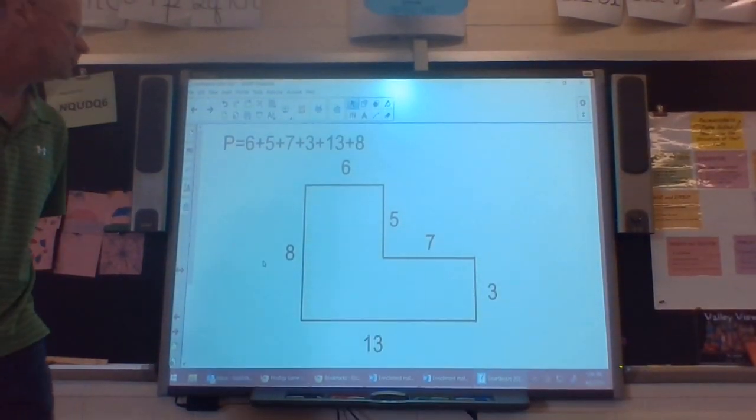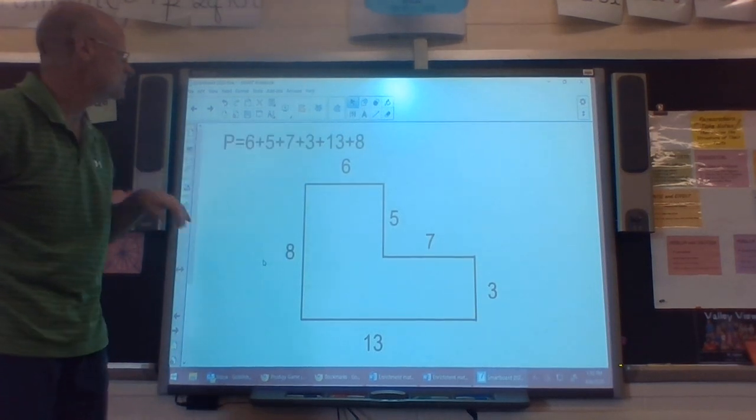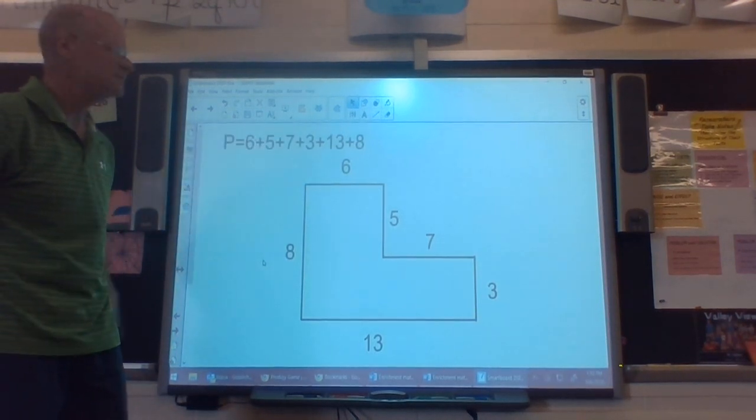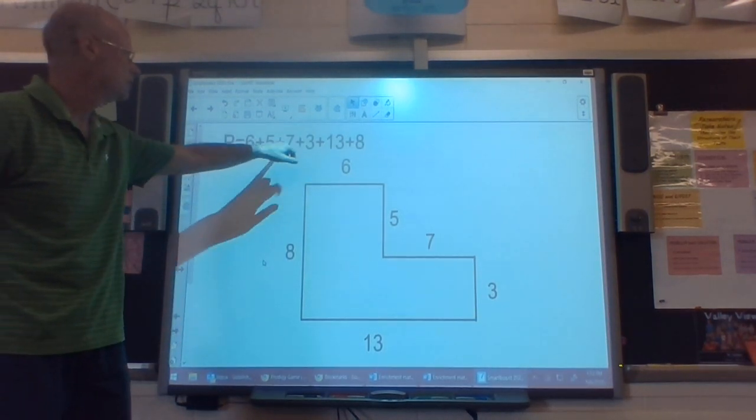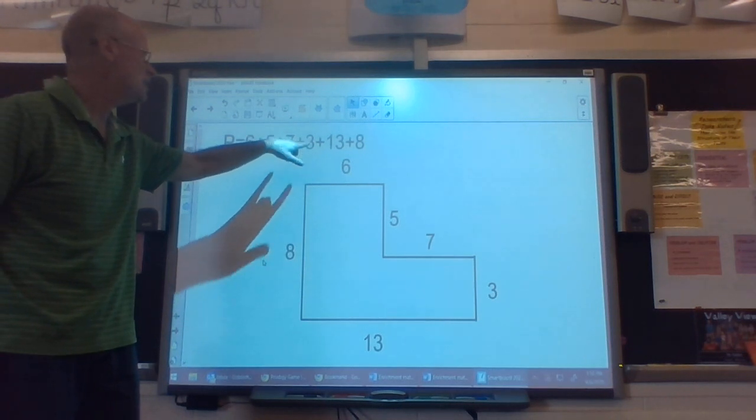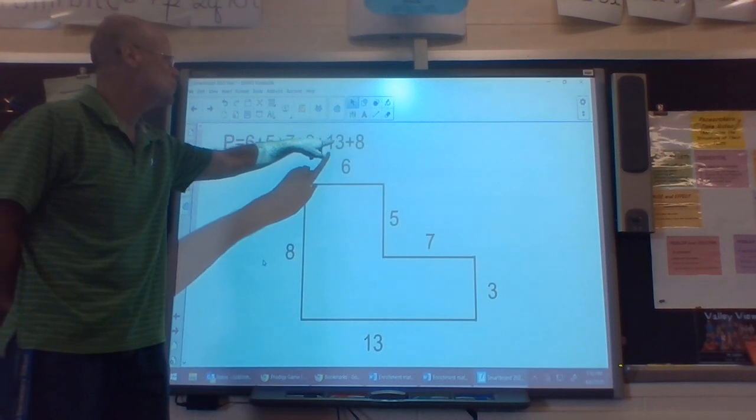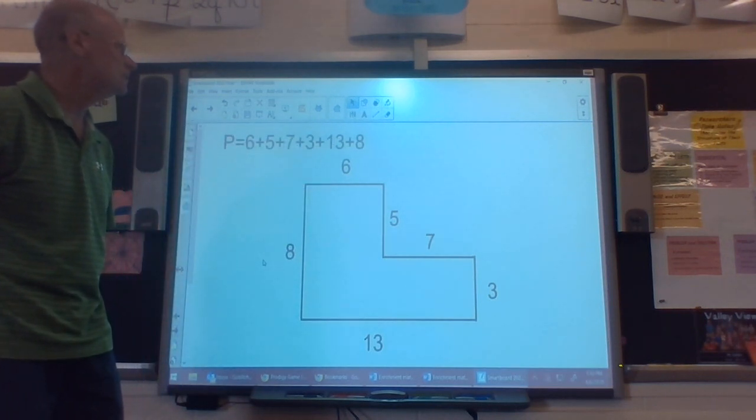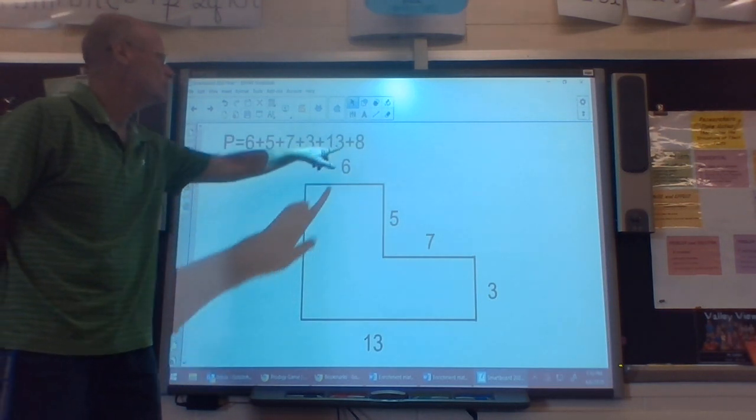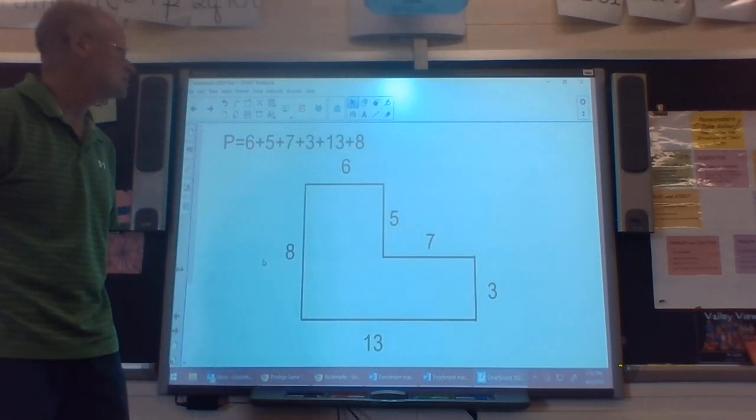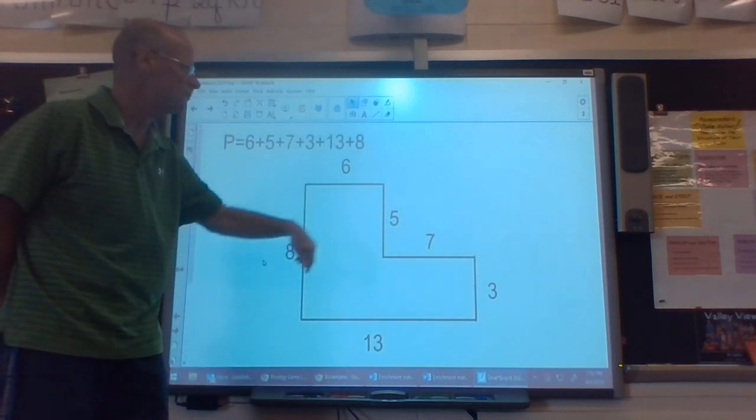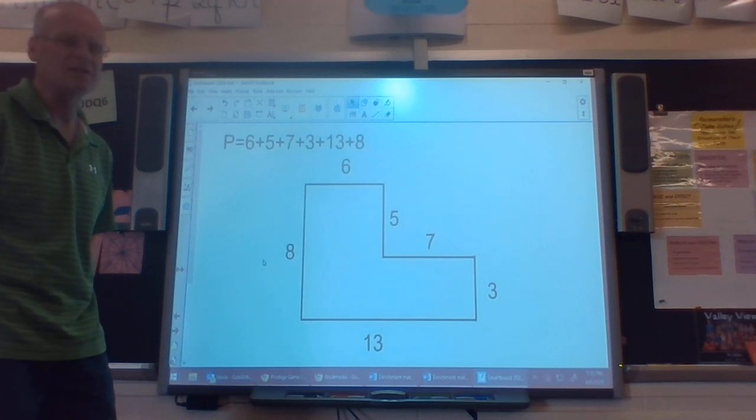For perimeter, again, not very hard. I just have to add my numbers together. 6 plus 5 is 11. 7 and 3 are 10. So this is going to give me 21 together. 21 plus 13 is 34. Plus 8 is 42. So my perimeter on this would be 42, and I'm going to use inches as my units again. So I have 42 inches.